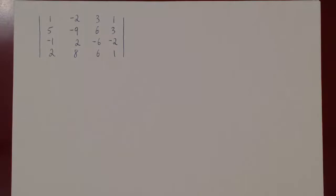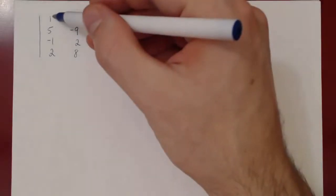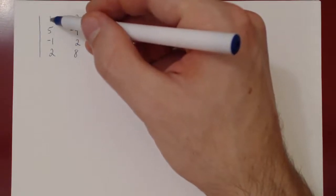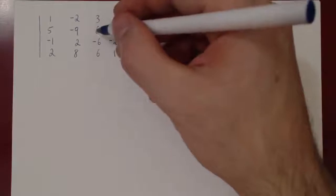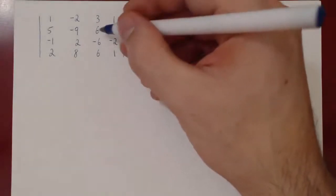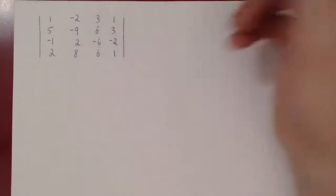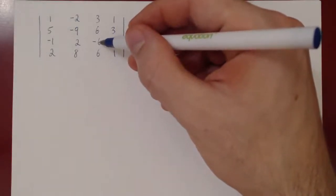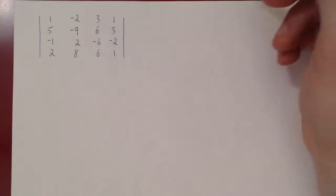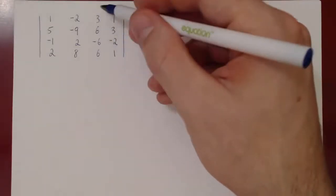Looking at this matrix, there are a lot of different angles of attack to get some zeros. There's a leading 1, so we could do row 2 minus 5 row 1, row 3 plus row 1, row 4 minus 2 row 1. Or we could look at this column — we have 6, negative 6, 6, and a positive 3 — and do row 4 plus row 3, row 2 plus row 3.